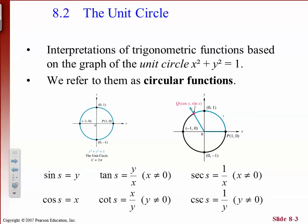We start with a circle with a radius of one, and we get x squared plus y squared equals one. That's our basic formula for the circle. And we have all these functions: sine, cosine, tangent, cotangent, secant, cosecant. These are the definitions of what those functions are in terms of radians.